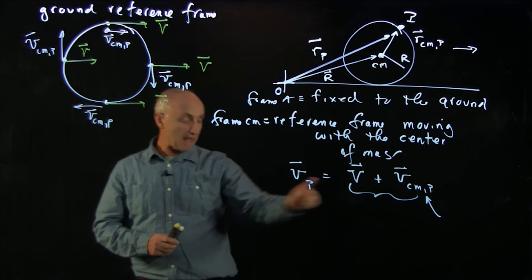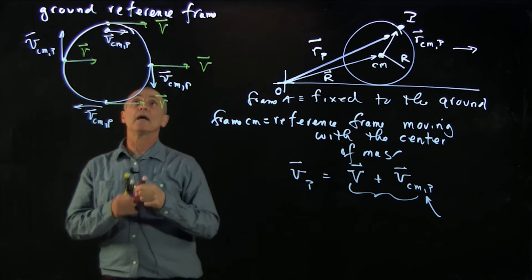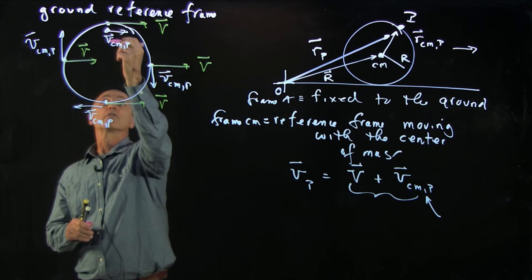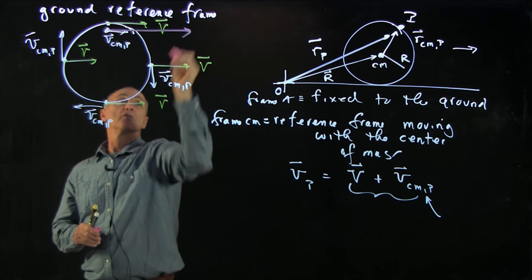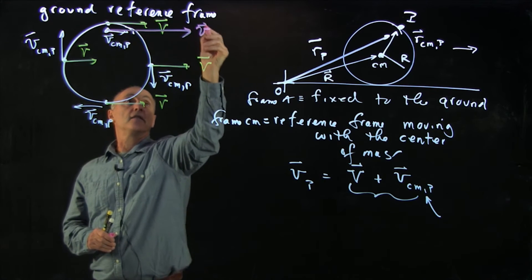So when we add these two vectors together, what we get is a longer vector in this direction. It would be the sum of these two pieces. So it would point like that. That's vp.